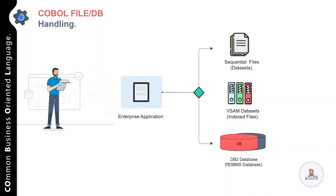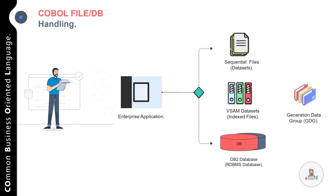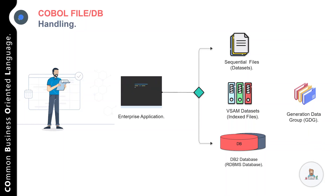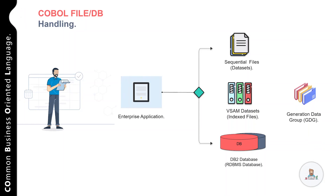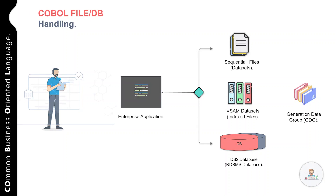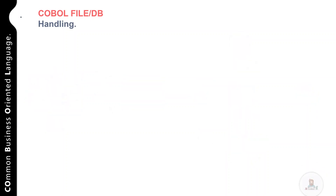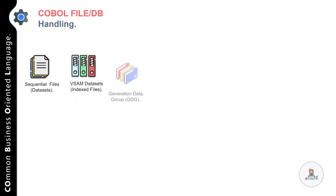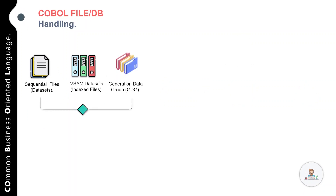The majority of enterprise applications rely on files and relational databases such as DB2. In general, there are different sets of files used by enterprise applications, and this category includes index files, sequential files, or relative files. Apart from that, you have generation data groups, which are generally used for backups. Now let me give an overview of a file and a database.